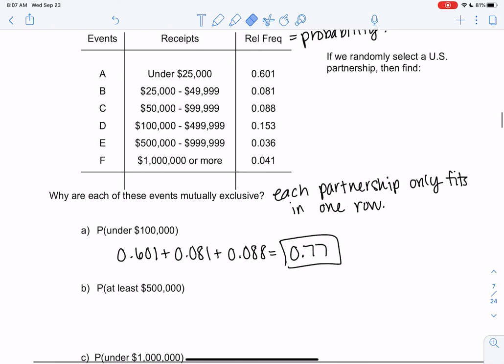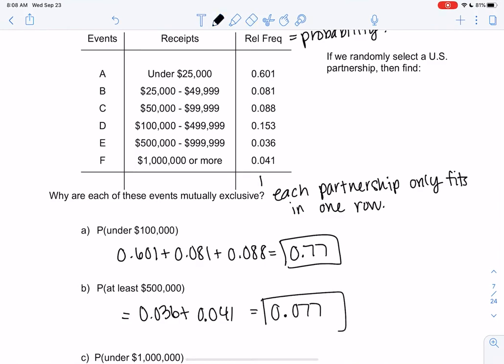At least 500,000 means 500,000 or more, so we just add the last two rows: 0.036 plus 0.041. We're adding the probabilities, those two. We don't have to divide because relative frequency has already divided. Technically the total is one, so everything's already out of one. That's why we're not dividing. In this case, we get 0.077.